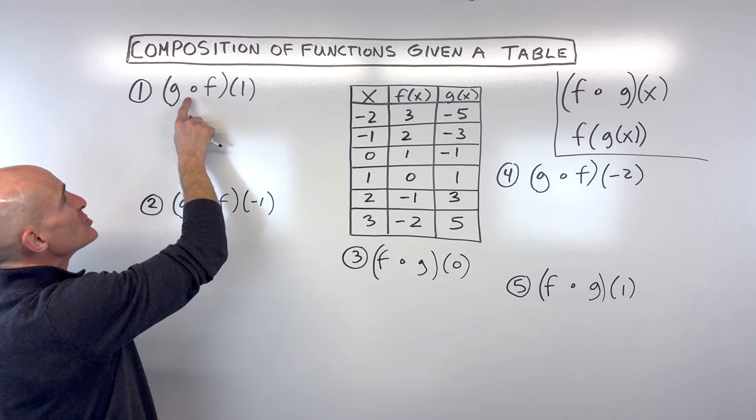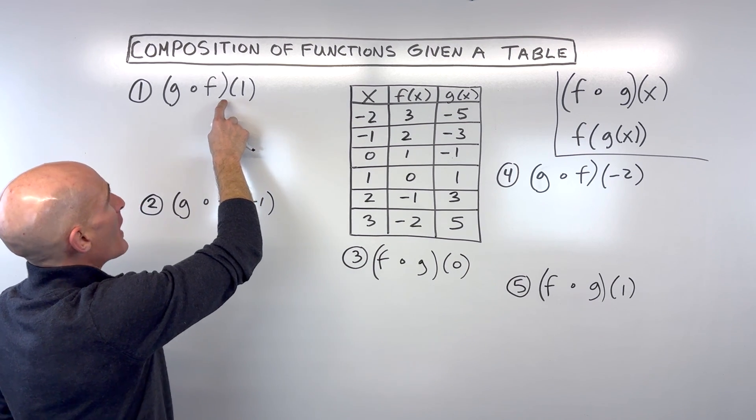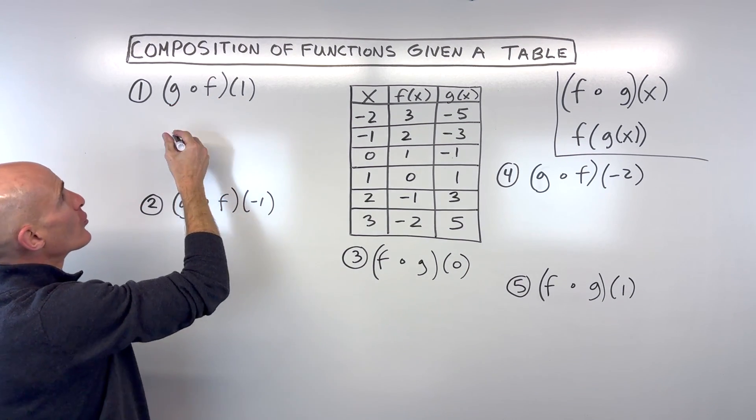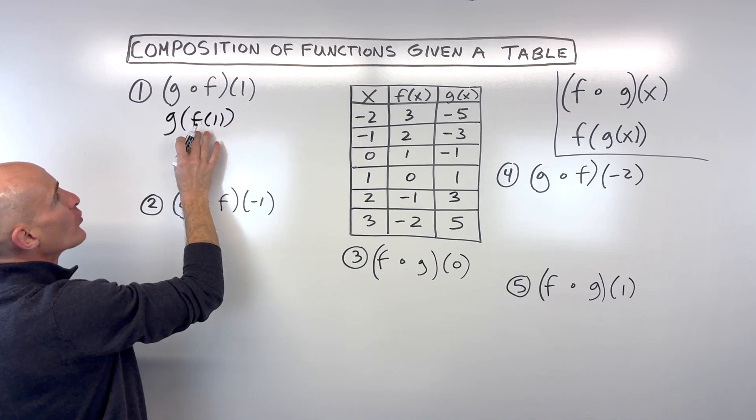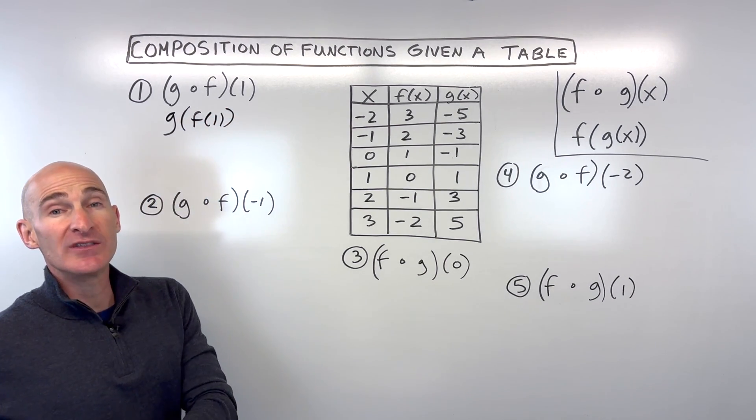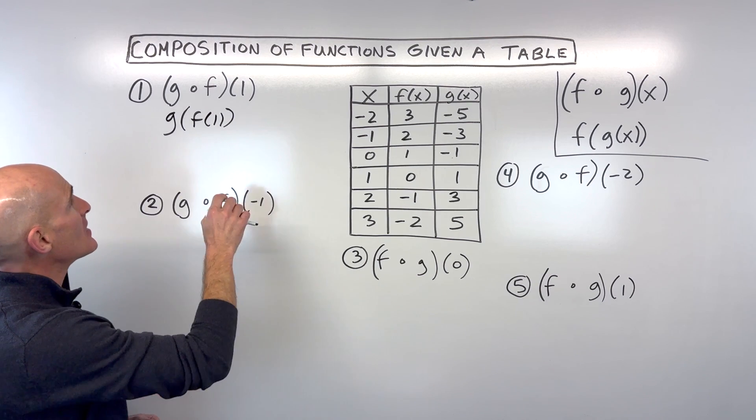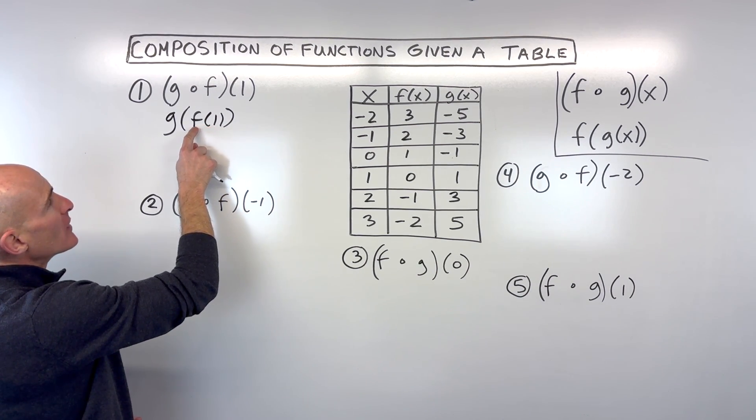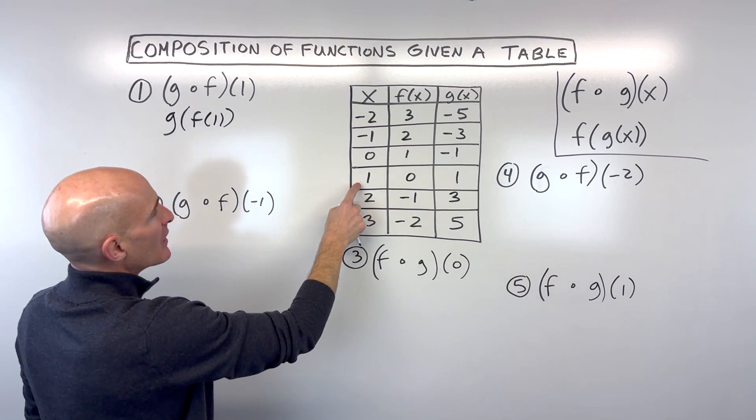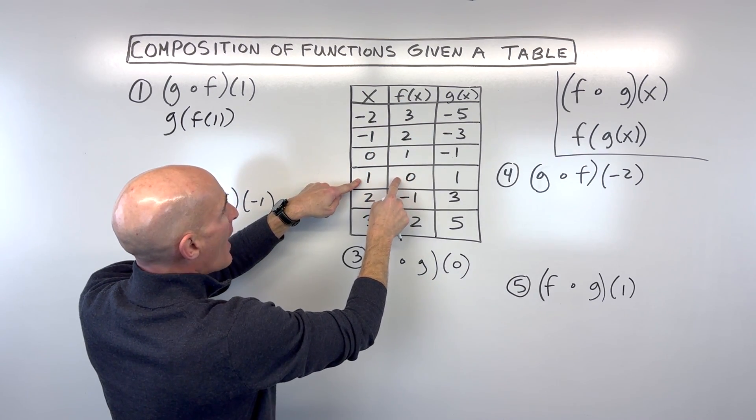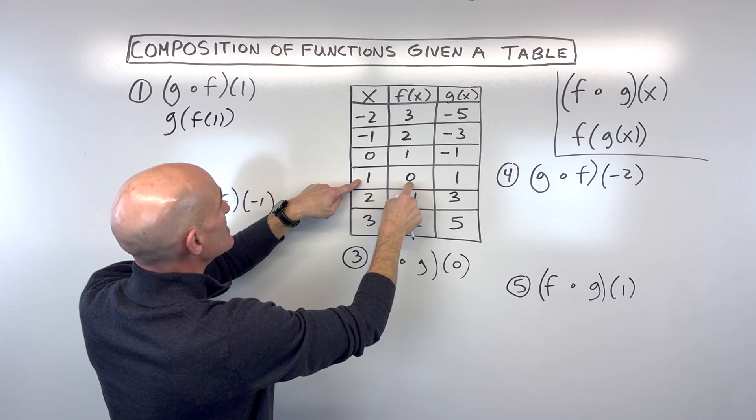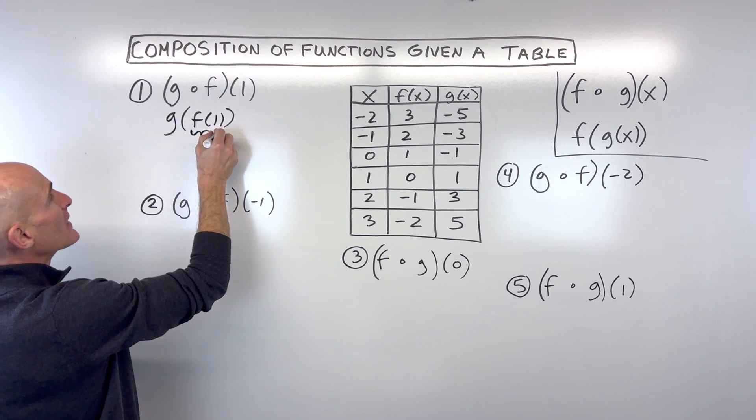When we see g of f of one, we're working from right to left, or as I like to think of it, from the inside out—like you learned with PEMDAS or order of operations. So if one is our input in our f function, we have our x value as one, and the output or y value for our f function is zero. That means this quantity here is zero.